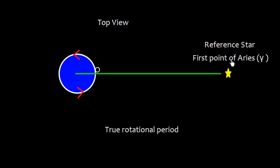Now let us look at the top view and we are having a reference star, that is First Point of Aries. This is an imaginary point and very far. So if we need to know the rotational period, we need to have a point which is at very large distance from earth.